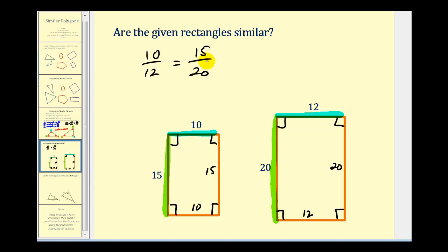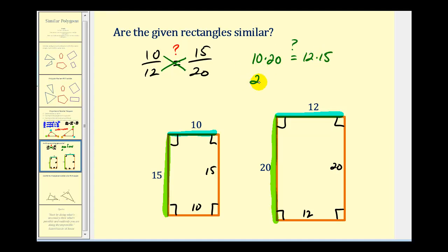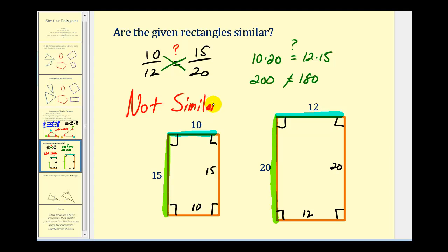If these two rectangles are similar, this would be a proportion, which means the cross products would be equal. So we check: 10 times 20 equals 12 times 15. Well, 10 times 20 is 200, and 12 times 15 is 180. Those obviously aren't equal, therefore these two rectangles are not similar. If they were similar, these would have been equal.